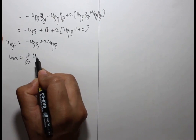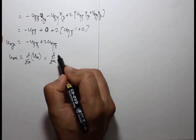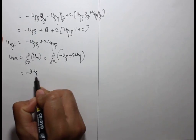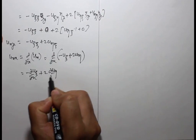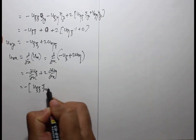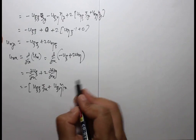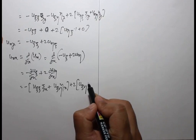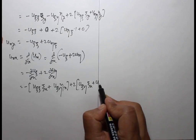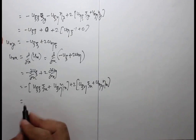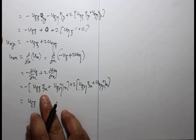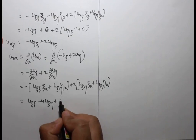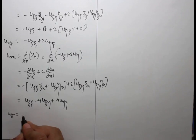Computing uxx: del/del x of ux equals del/del x of (minus uξ plus 2uη). Using the chain rule with ξx equals minus 1 and ηx equals 2, we get uξξ minus 4uξη plus 4uηη.